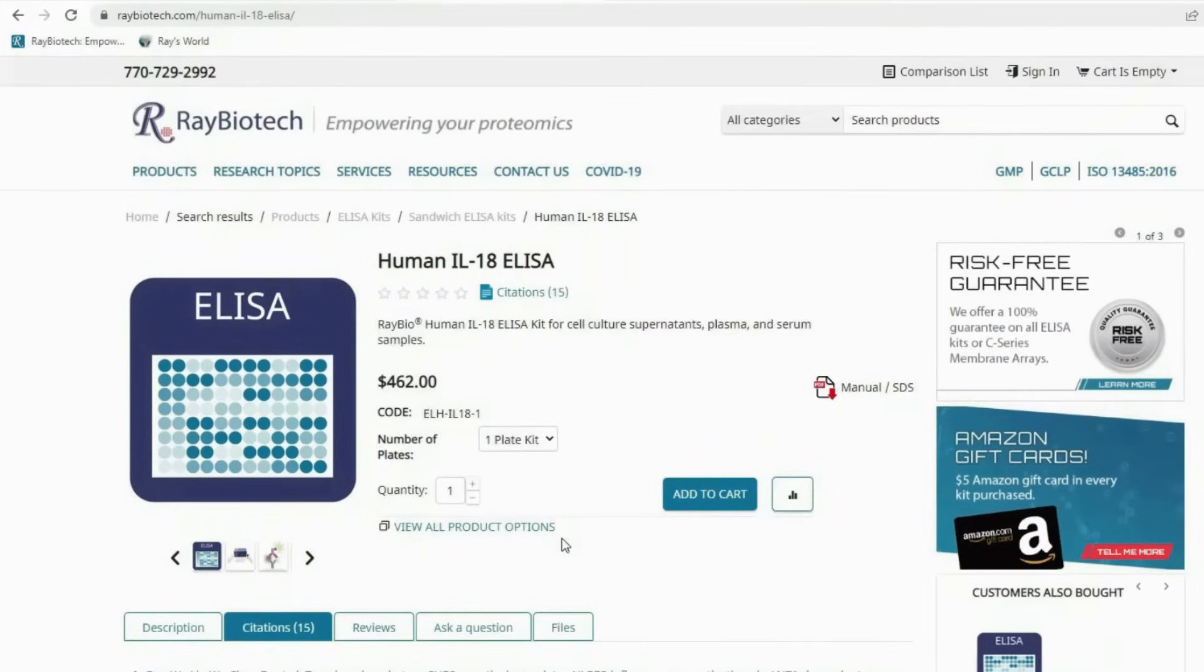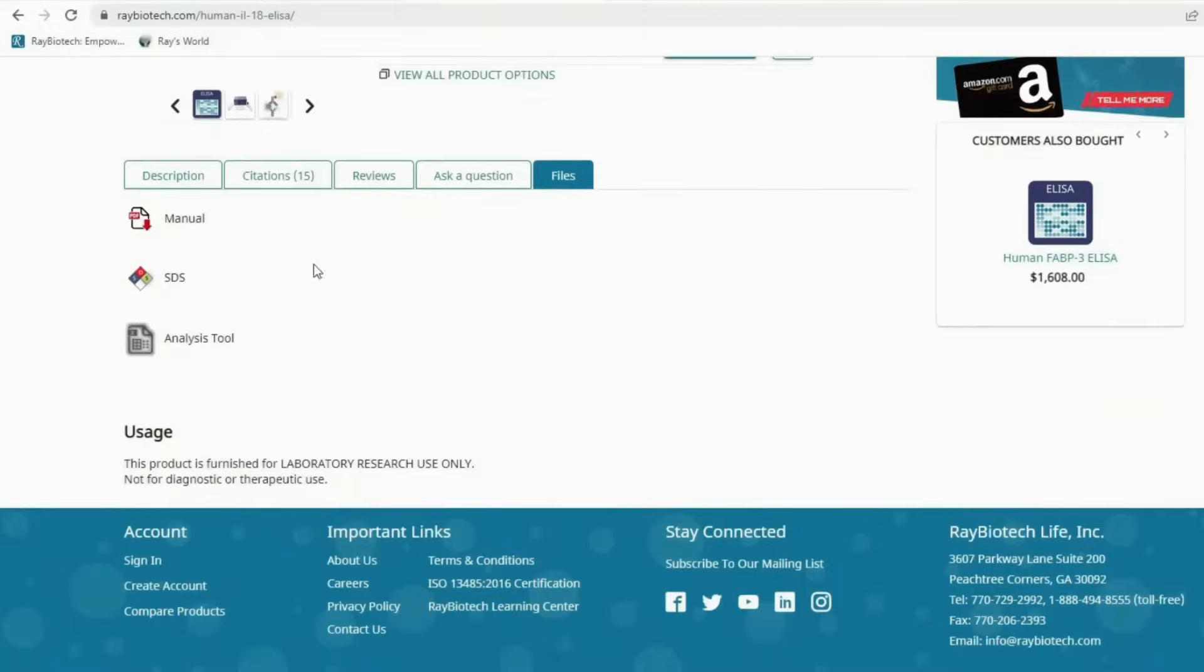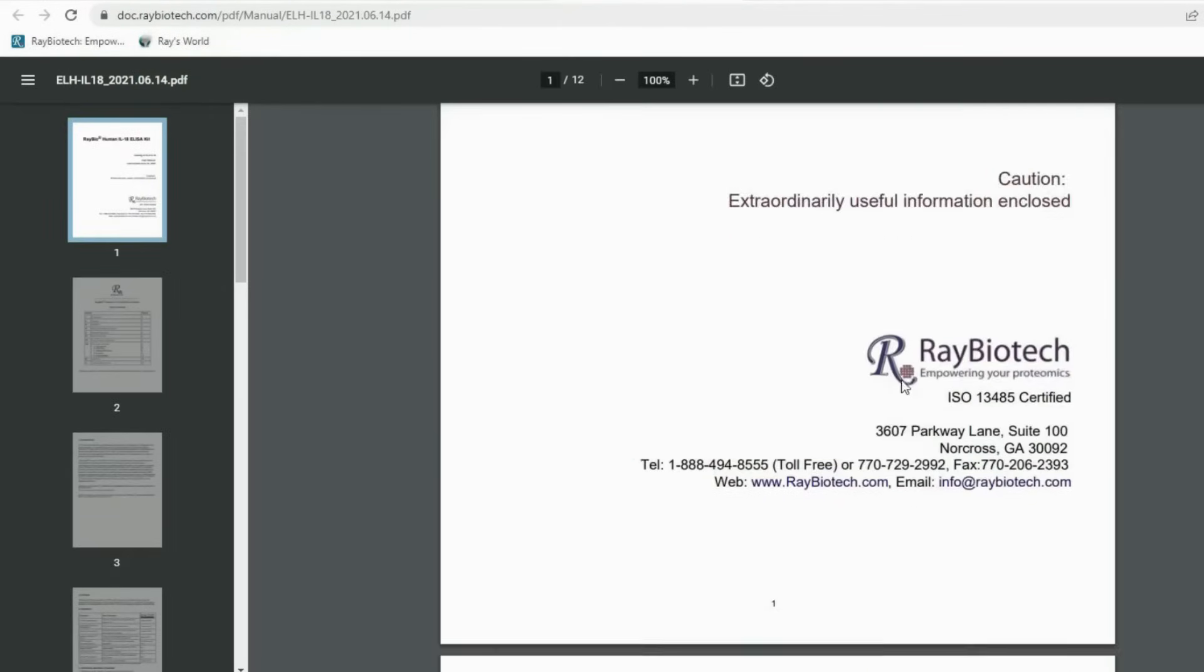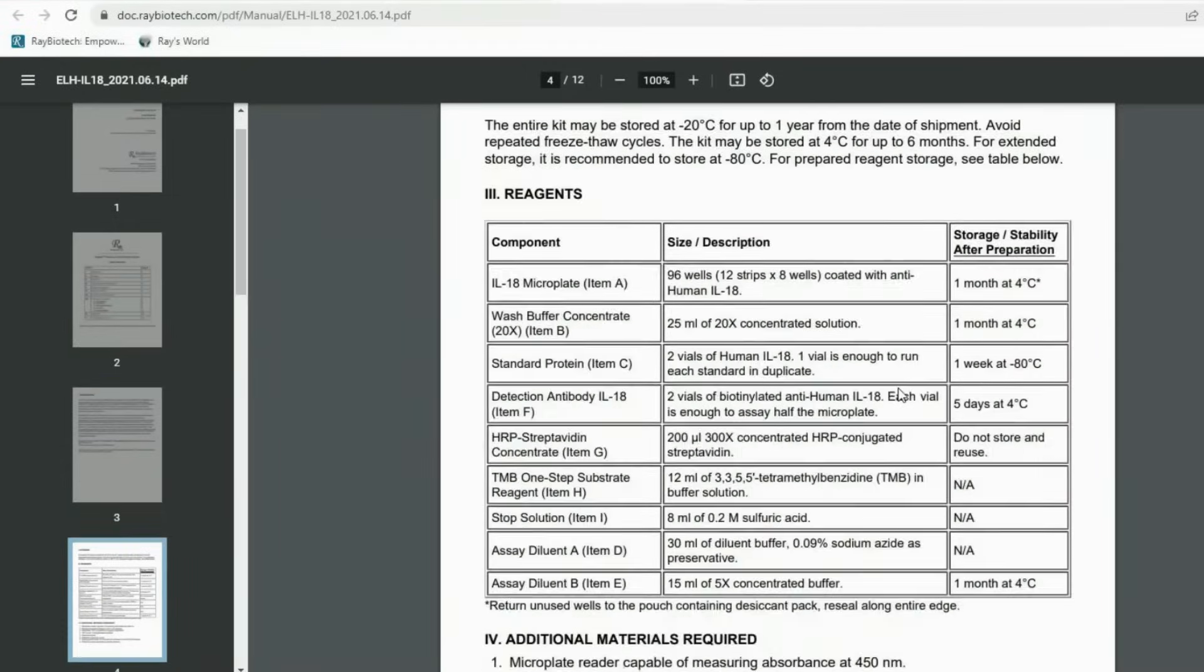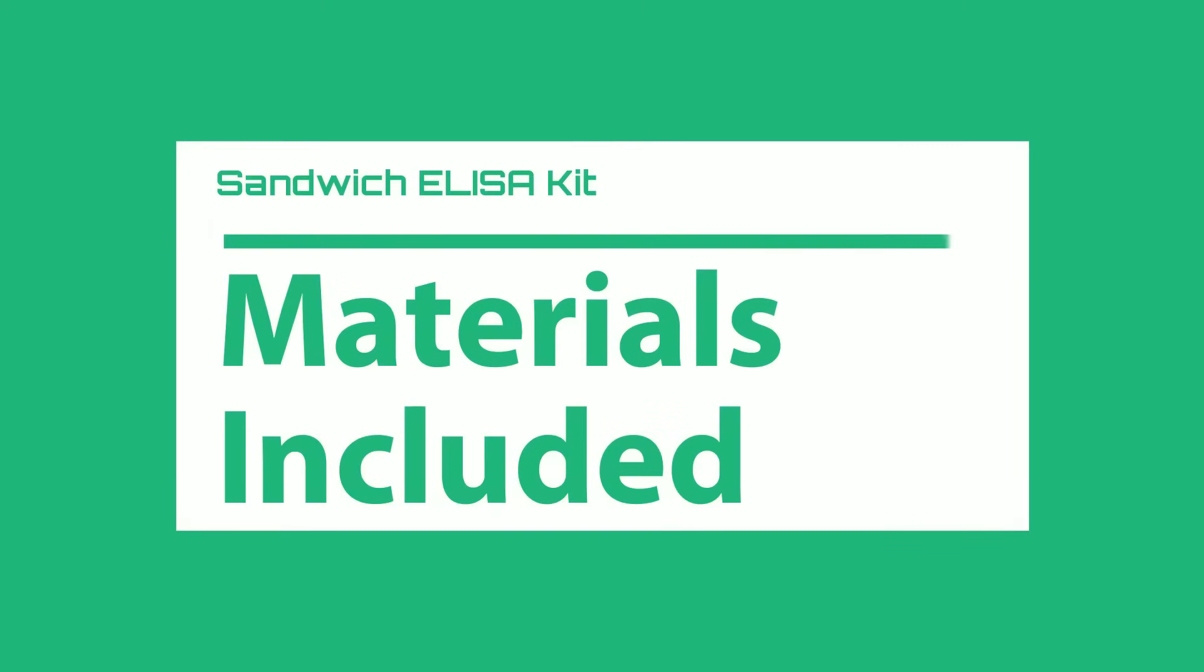We are going to demonstrate Human IL-18. Interleukin 18 is one of a number of pro-inflammatory cytokines, the activities which appear to be species specific. You can read more about it in the manual introduction. As this is a demonstration for all of our ELISA kits, we are going to start with the materials section.